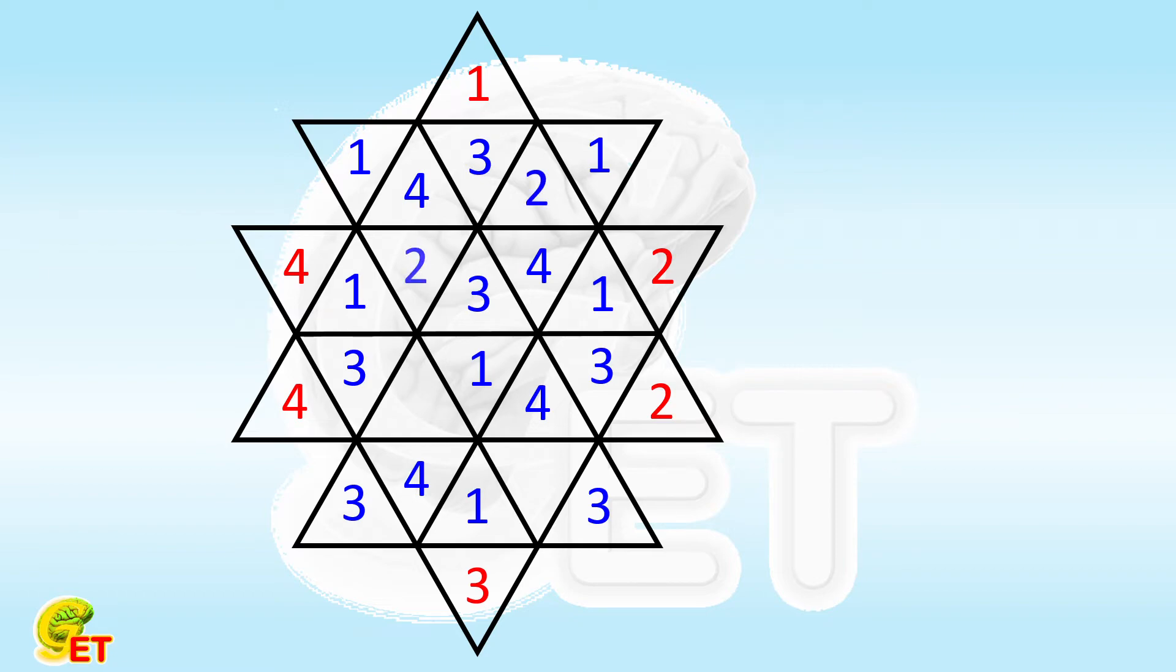Now let's check. Large triangles facing up: 1, 2, 3, 4, 5, 6, 7, 8.